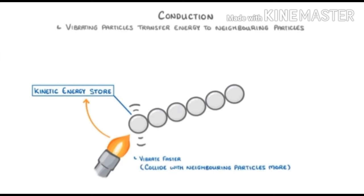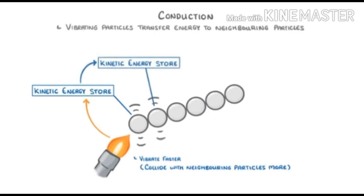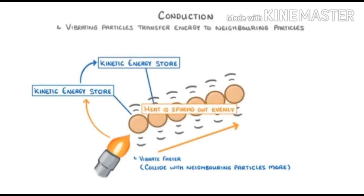As collisions transfer kinetic energy, the neighboring particles also vibrate faster and collide more with their neighbors. As this process repeats, energy is passed along the piece of metal until the heat is spread out evenly and it is pretty much the same temperature everywhere.